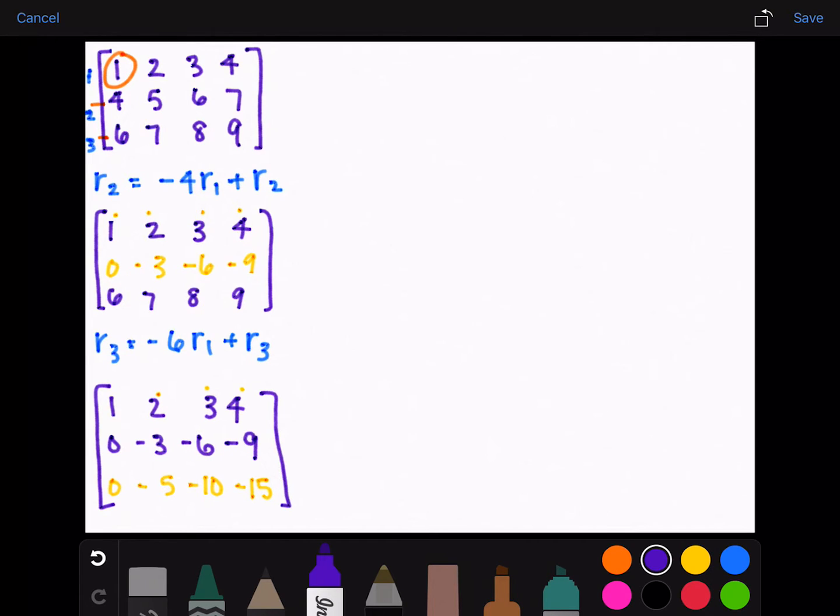Now we have zeros underneath the one. Now we go one down and then over far enough until we reach a non-zero term, which in this case is a three, negative three.